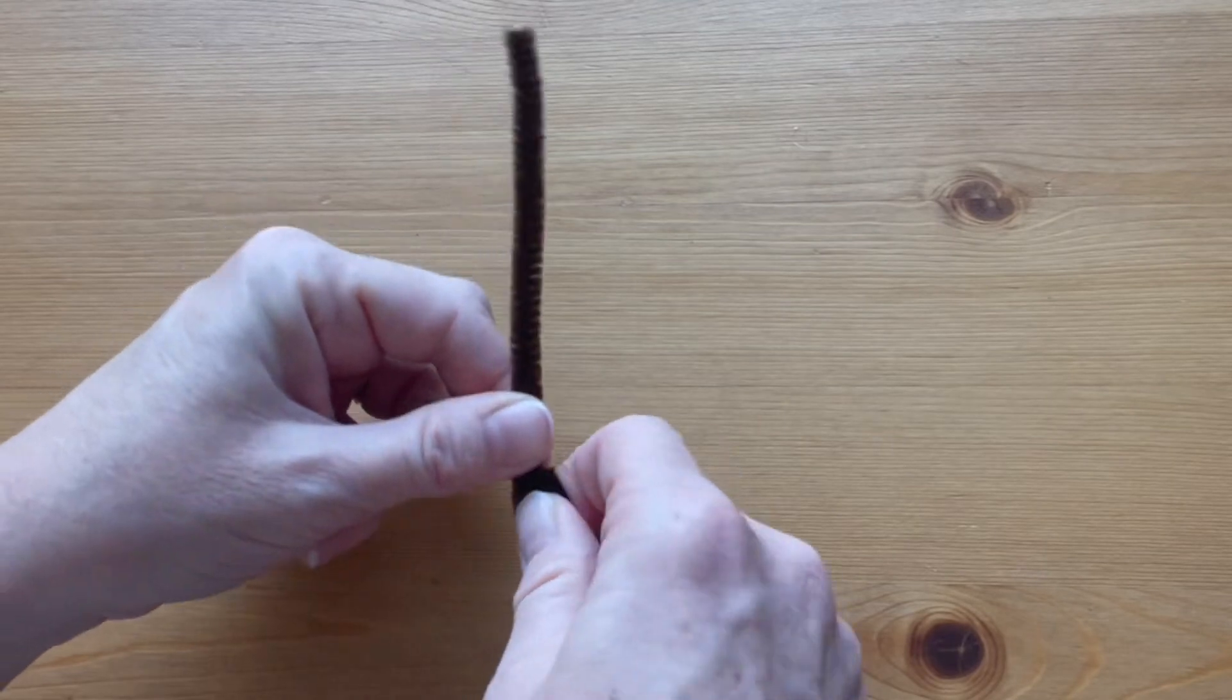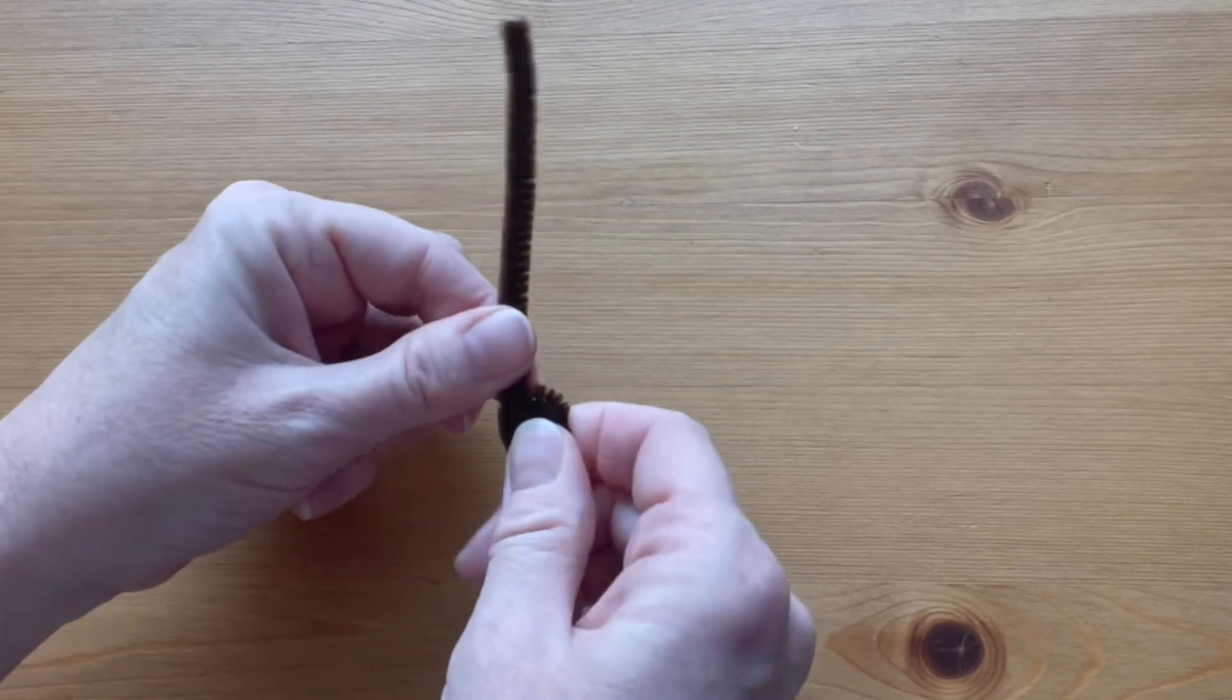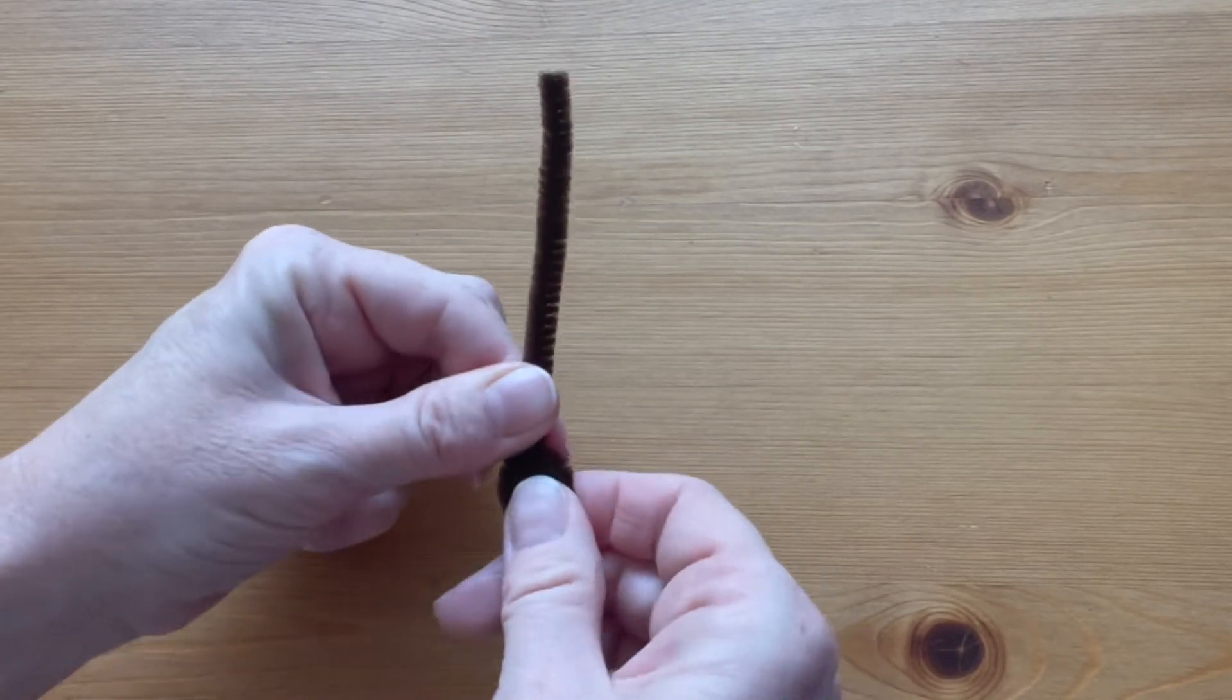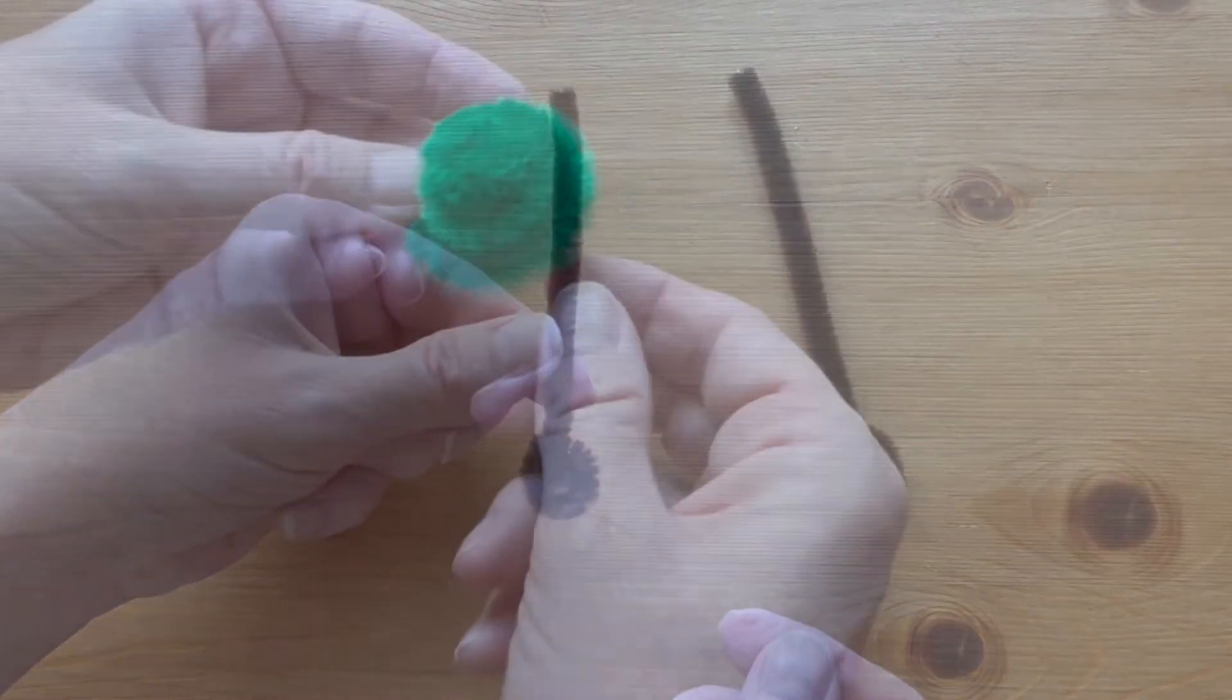You're going to do this to about halfway up the pipe cleaner and then bend it so it faces forward.